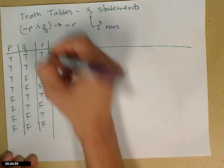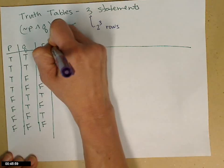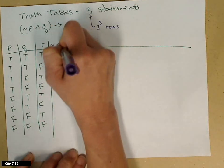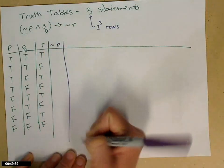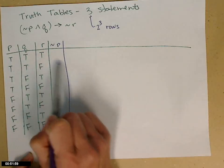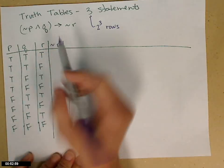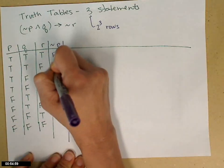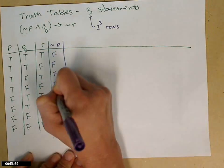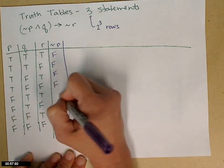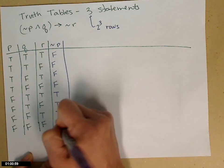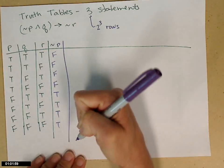So I need a not P — let's go ahead and do that first. Not P just changes the truth value of what P was. So all the trues become falses: I'll have four falses, because I started with four trues, and then I'll go to four trues. So it changes the truth value.